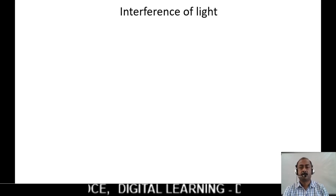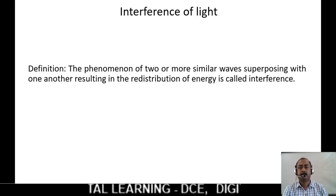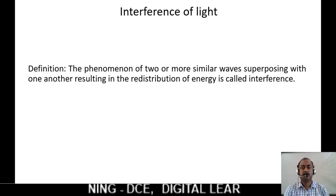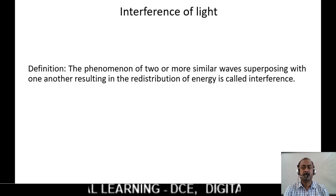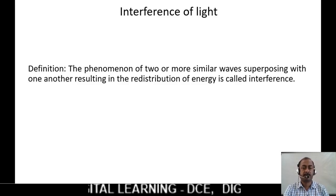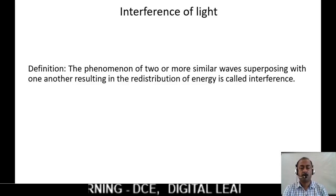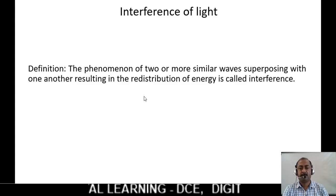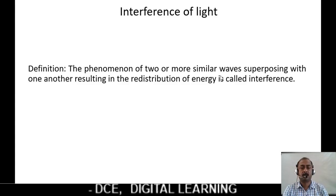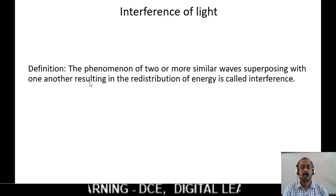Let us see what is interference of light. Interference means it is the modification in the distribution of light energy by the superposition of two or more light waves, known as interference of light. It can also be defined as the phenomenon of two or more similar light waves superposing with one another, resulting in the redistribution of light energy.